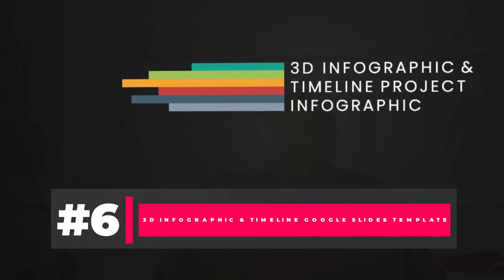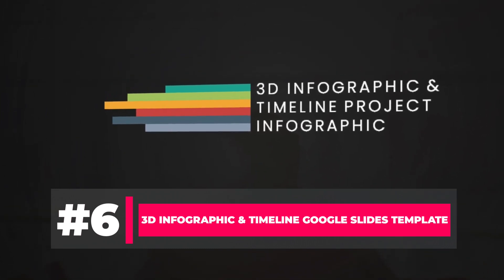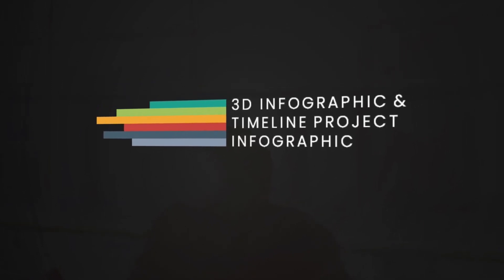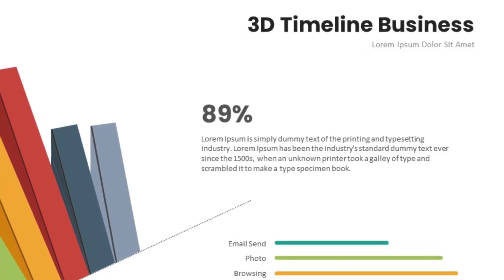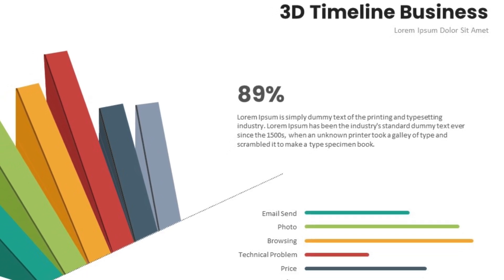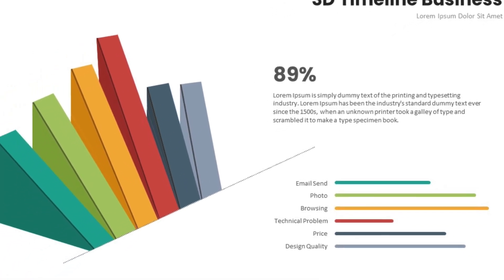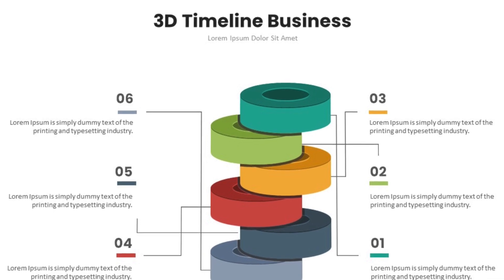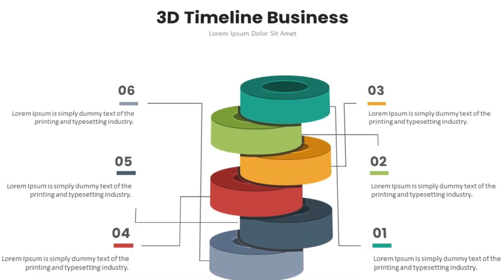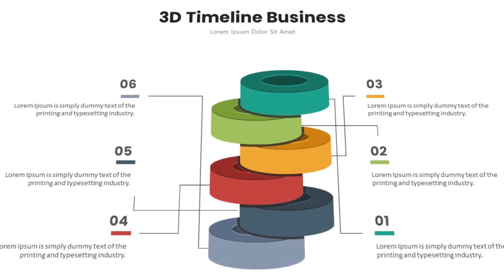Need a bit of depth to your presentation? How about the 3D Infographic and Timeline Google Slides theme? You'll unlock more than 60 unique slides, each of which has an infographic with depth. Slides isn't good at creating 3D shapes on its own, but by using a pre-built template from a master designer, your presentation can include them. Use the light and dark versions for endless variety.